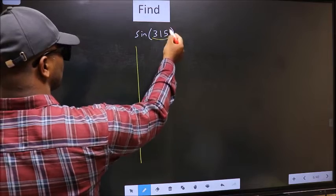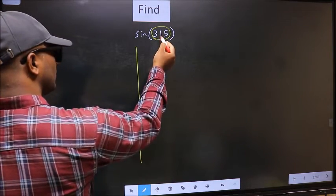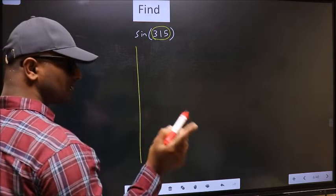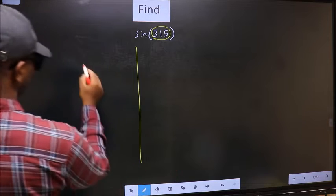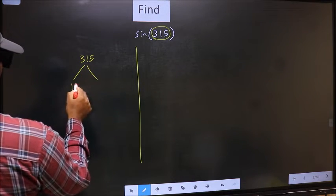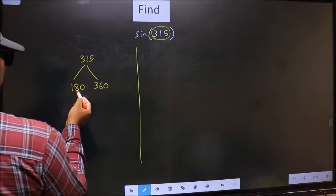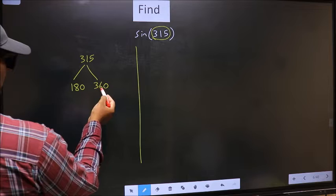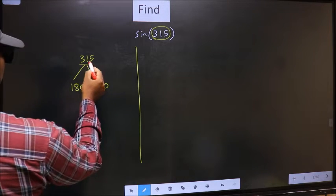Here we have 315. Now you should check: 315 lies between which two multiples of 180? What I mean is 315 lies between 180 and 360. This is 180 times 1 and this is 180 times 2. Between these two numbers, 315 lies.